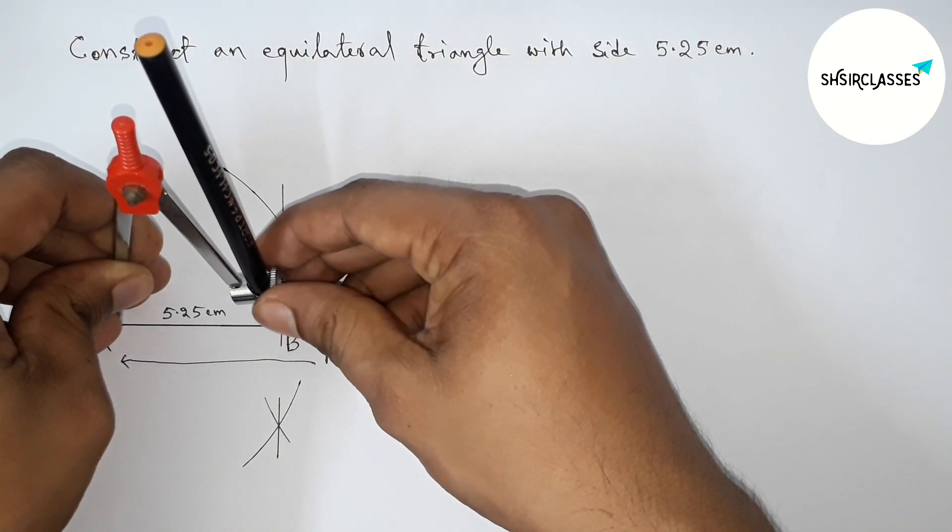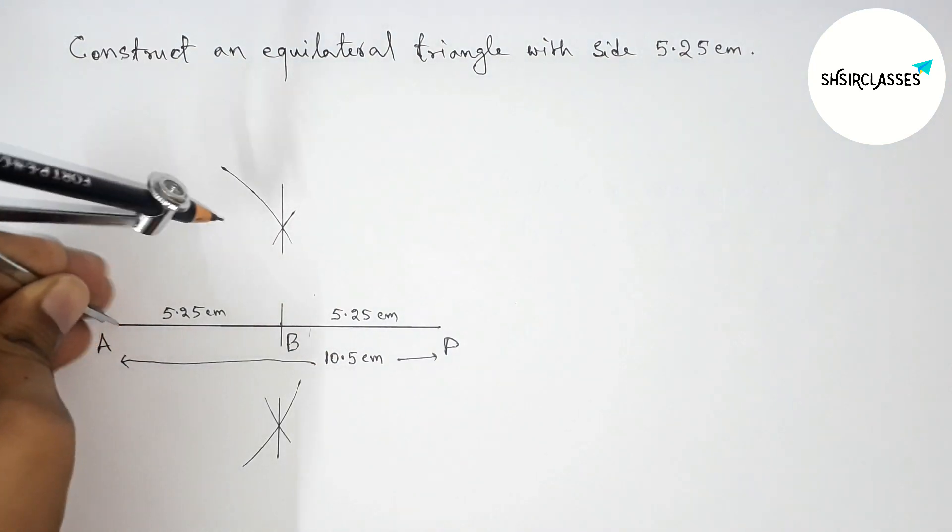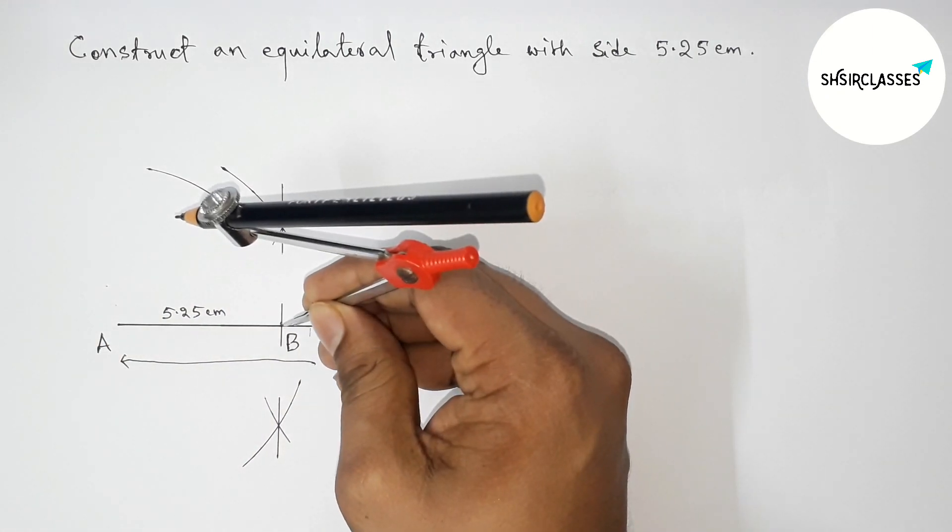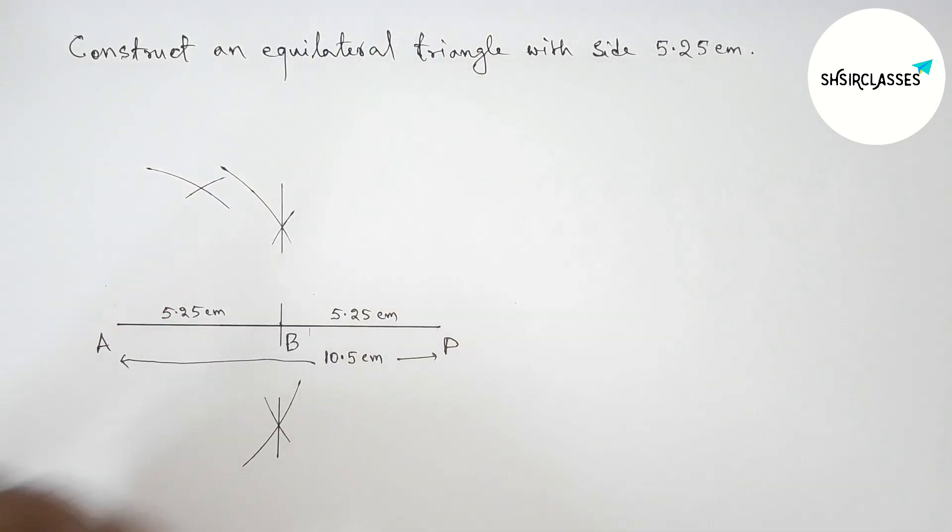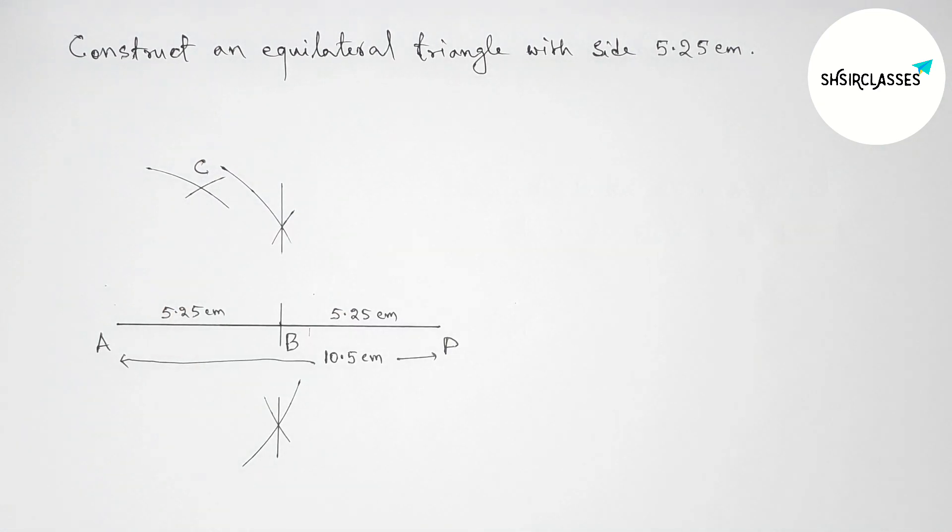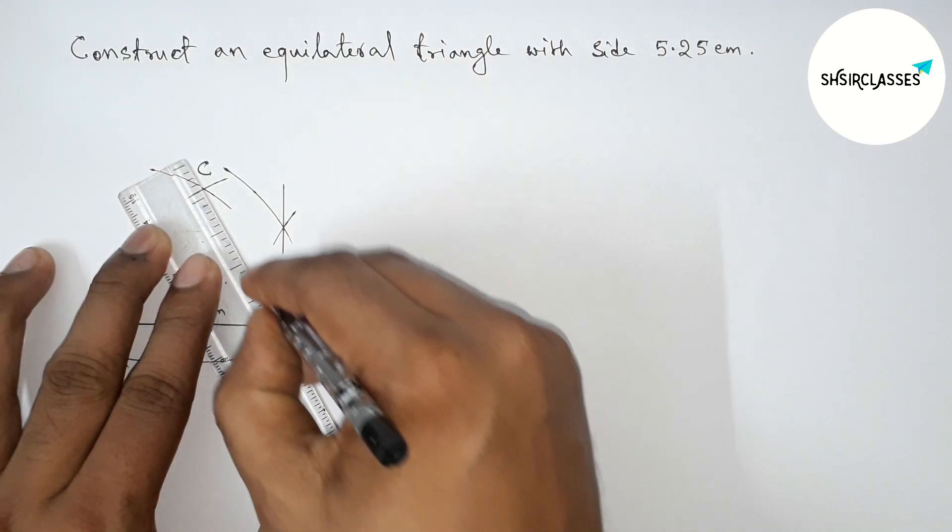Perfect. Now drawing an arc. Again with same length, putting the compass on point B and cut here. So here both curves meet at a point. Taking here point C. Next, joining the side BC.